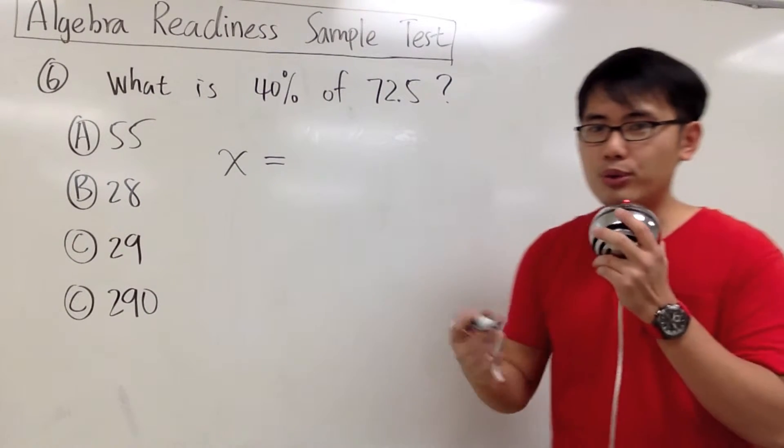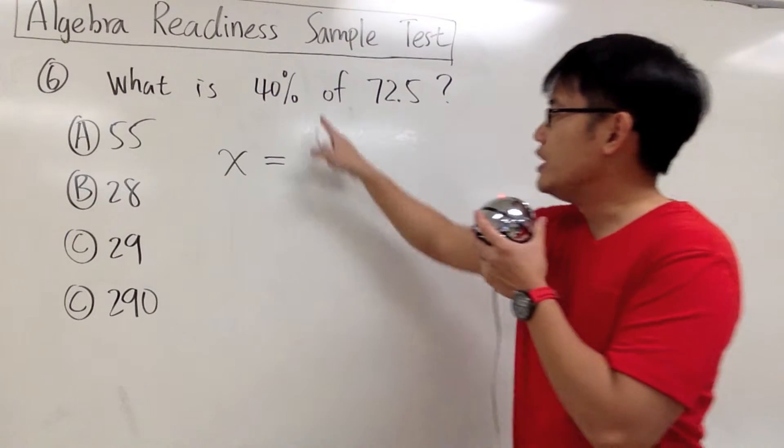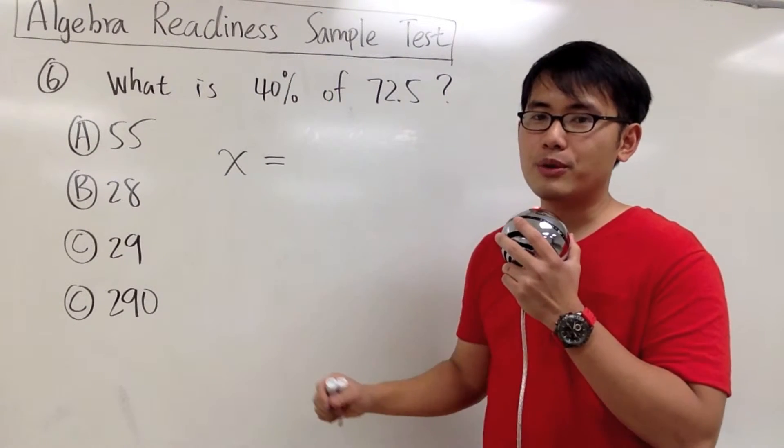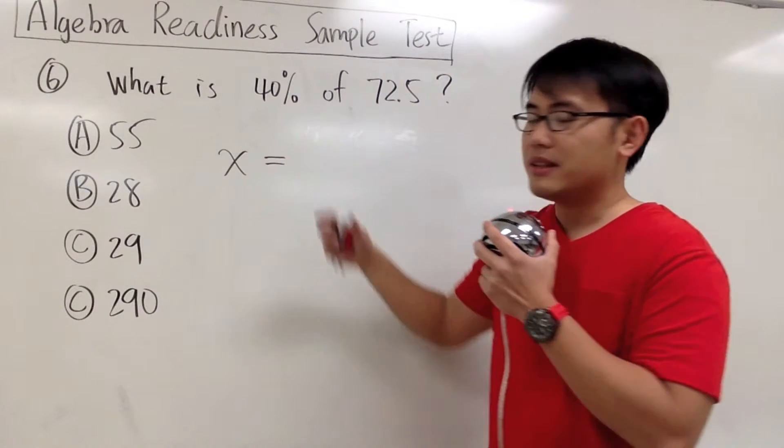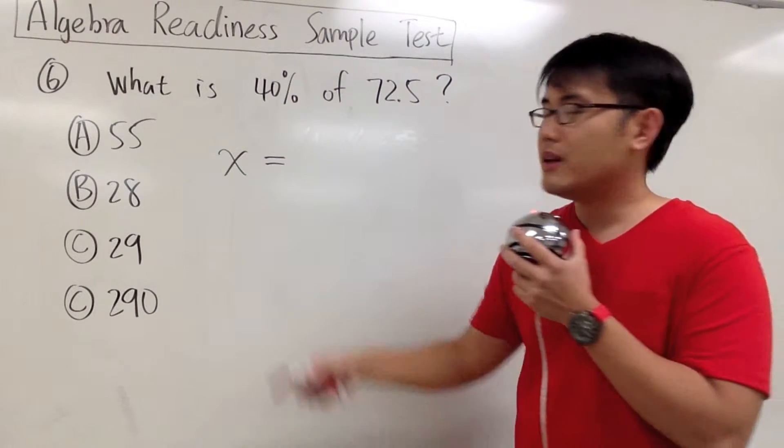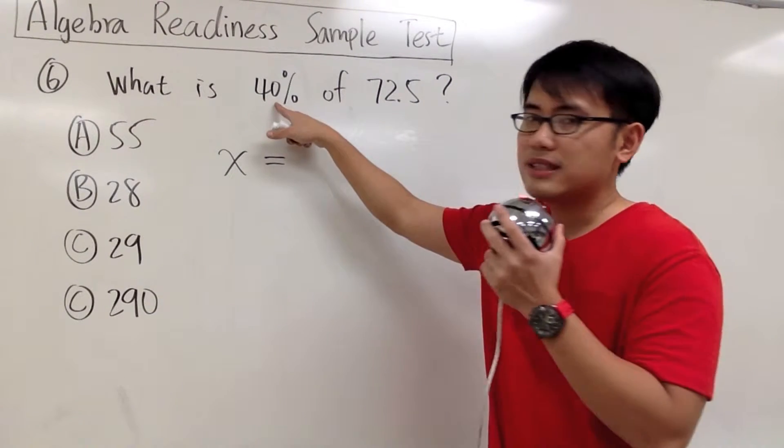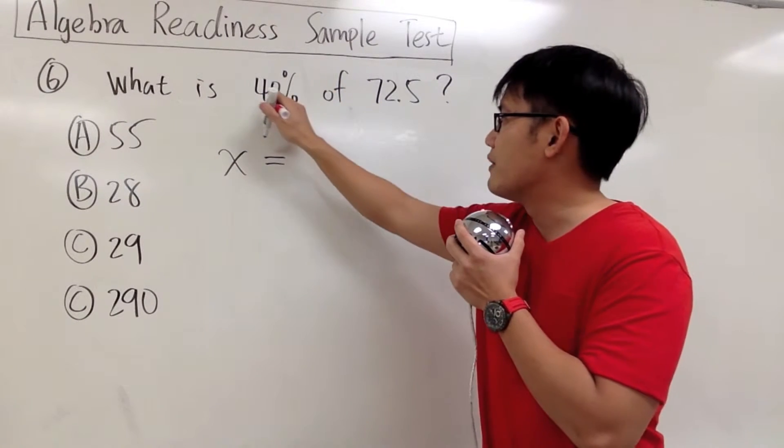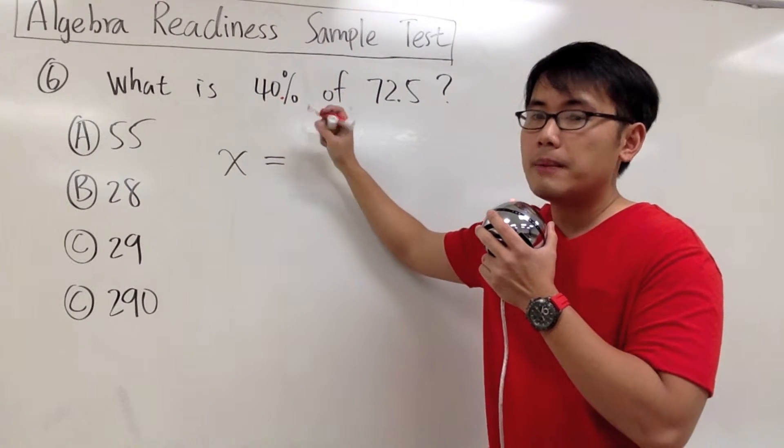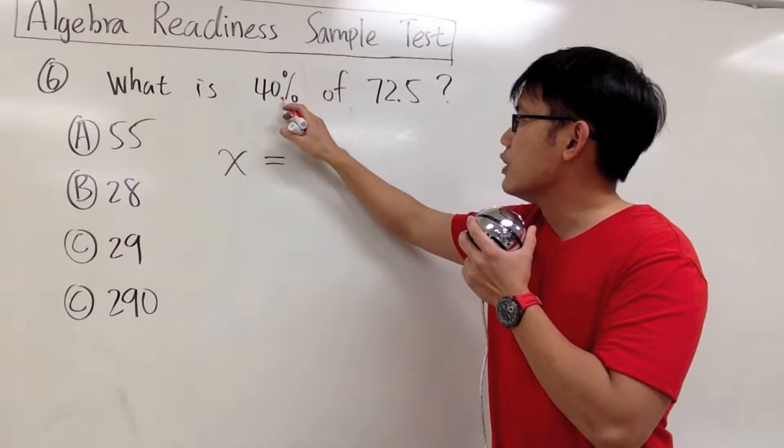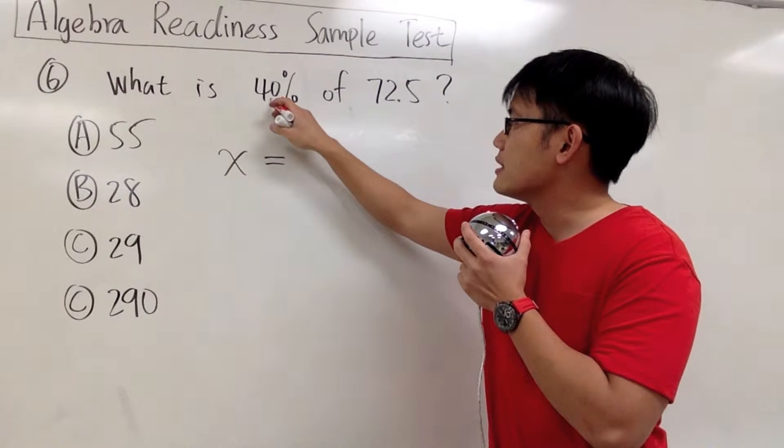But before we do computation, we need to change the percent into a decimal. For 40%, notice we have 40 as a whole number, so technically the decimal point is right here. But the percentage symbol tells us to move the decimal point once, twice,